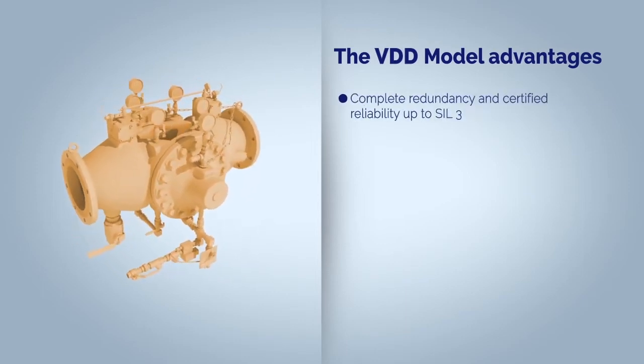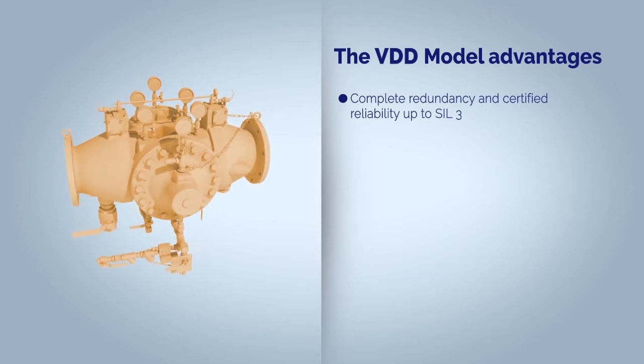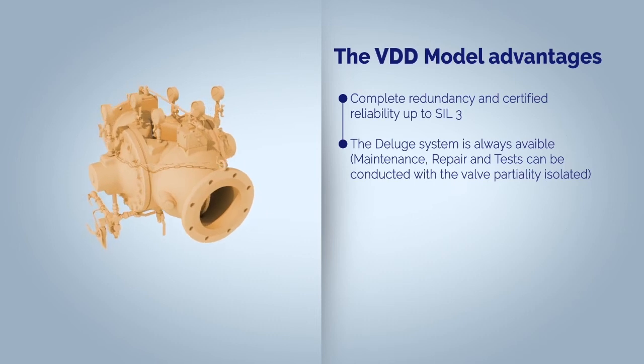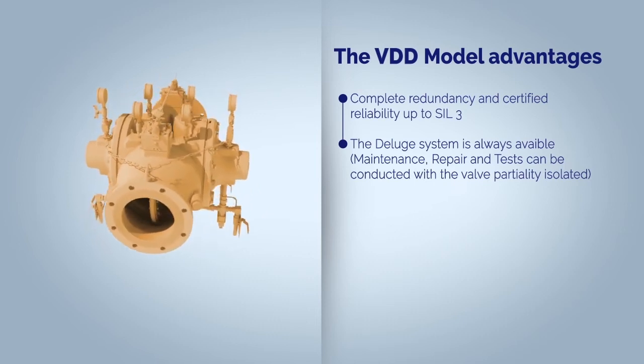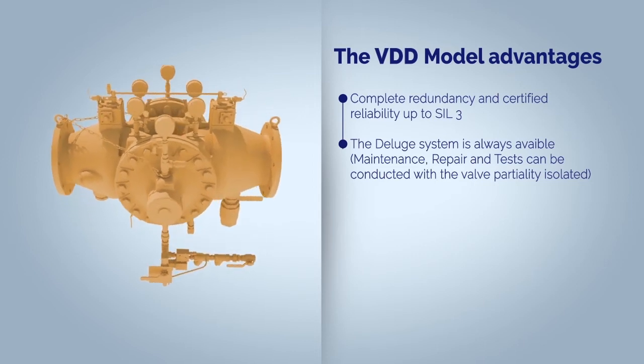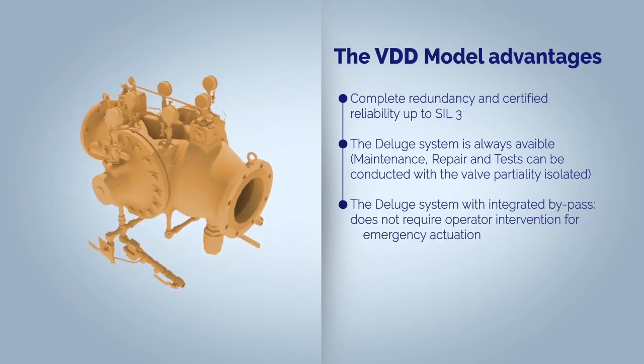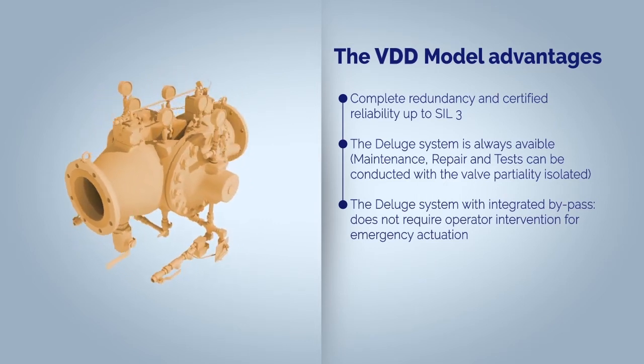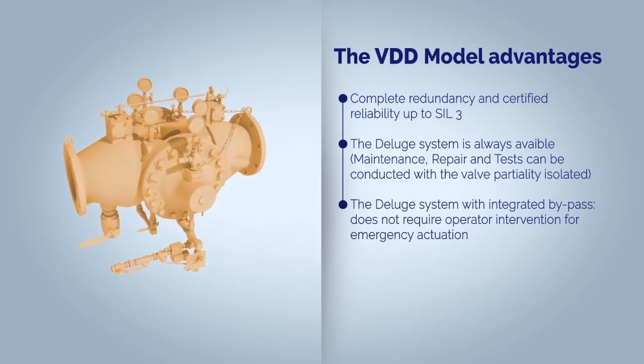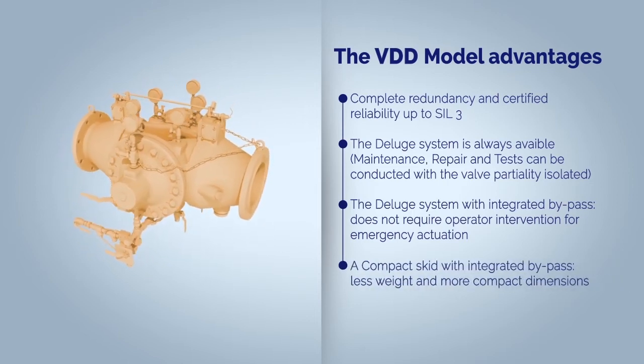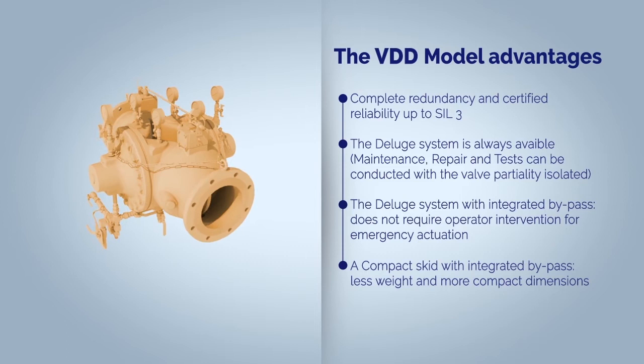Complete redundancy and certified reliability up to SIL 3. A deluge system that is always available. Maintenance, repair and tests can be conducted with the valve partially isolated. A deluge system with an integrated bypass. Therefore, it does not require operator intervention for emergency actuation. A compact skid with integrated bypass. Less weight and more compact dimensions.